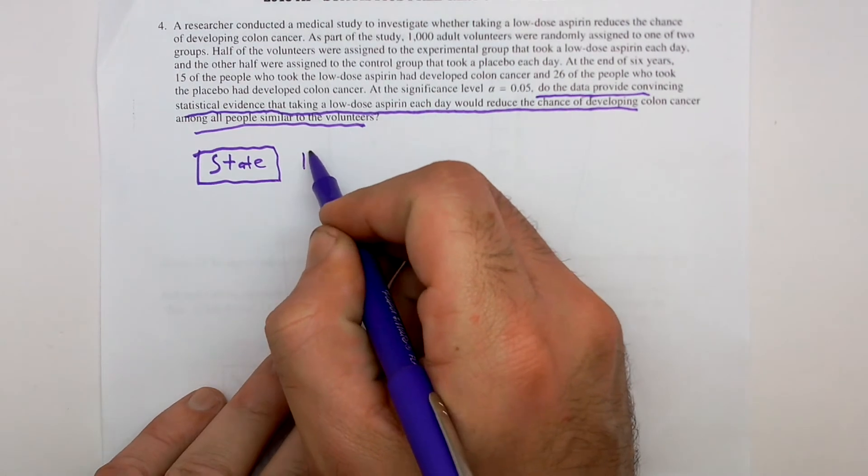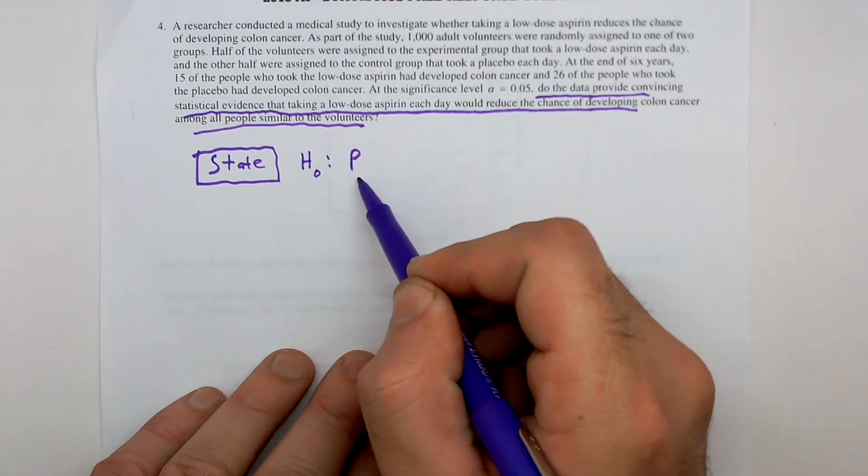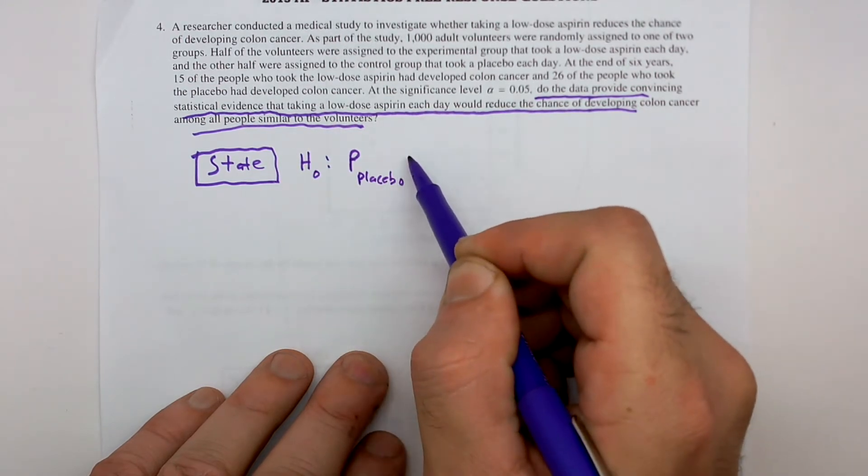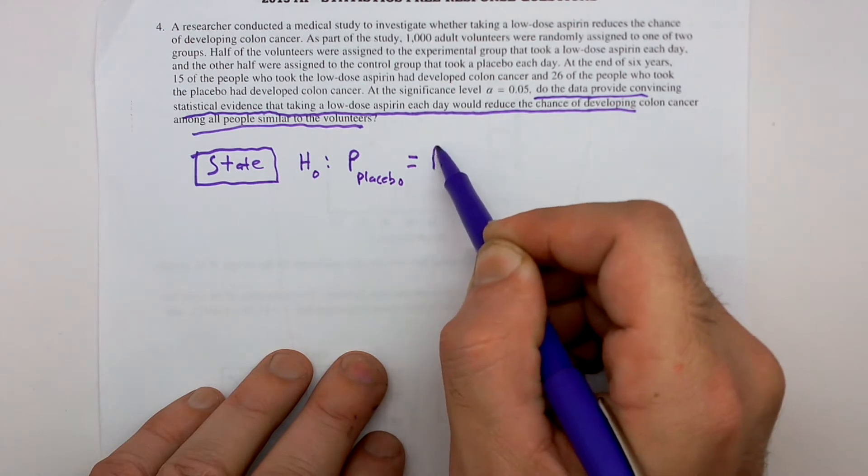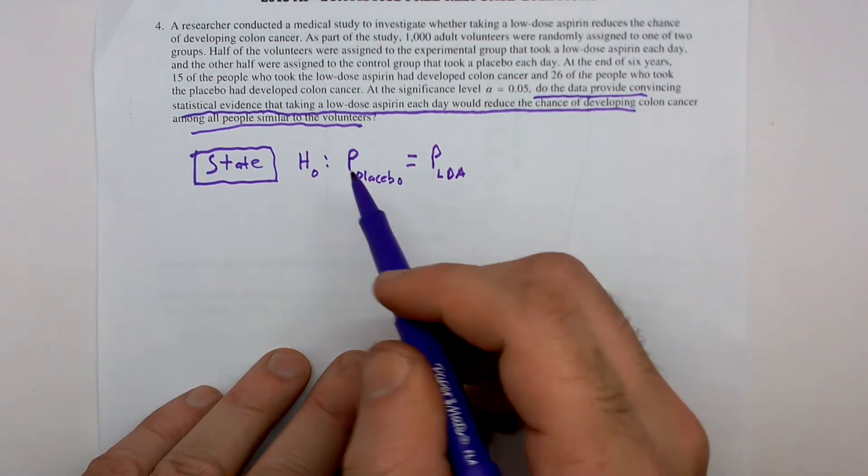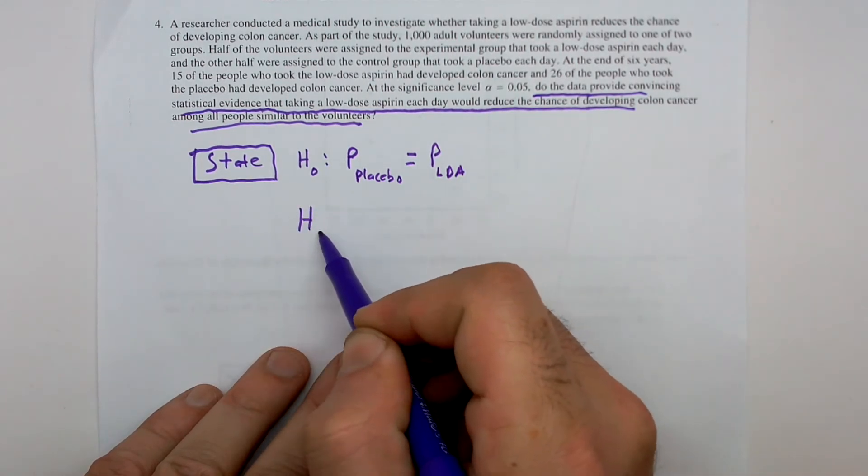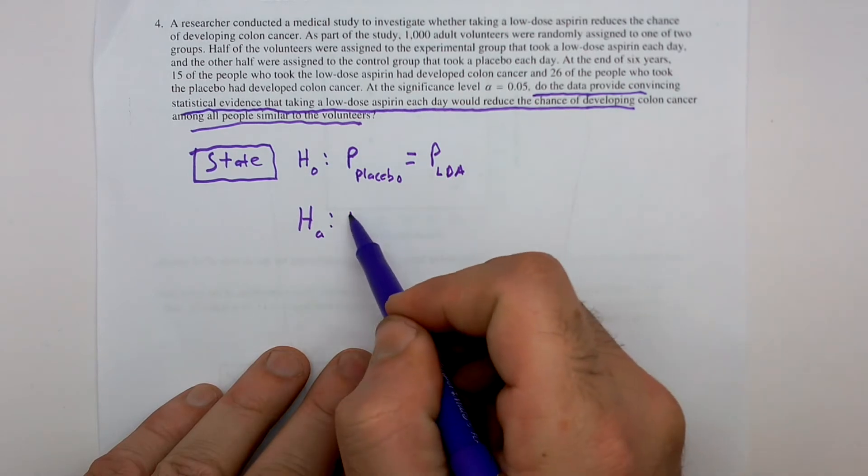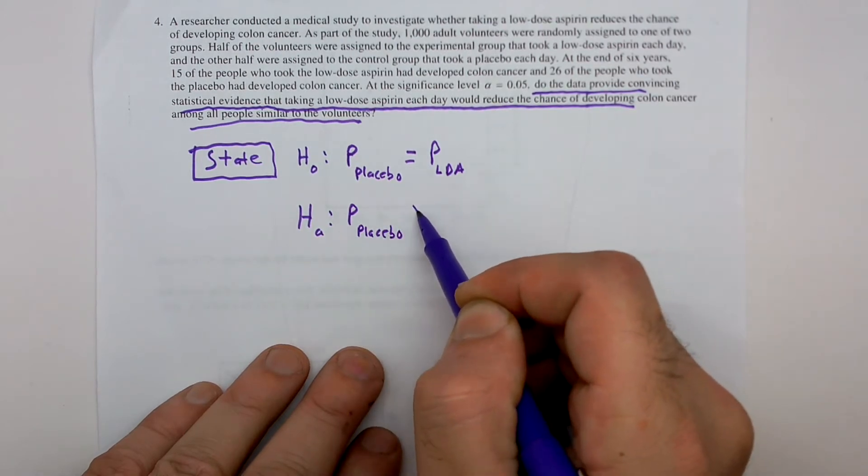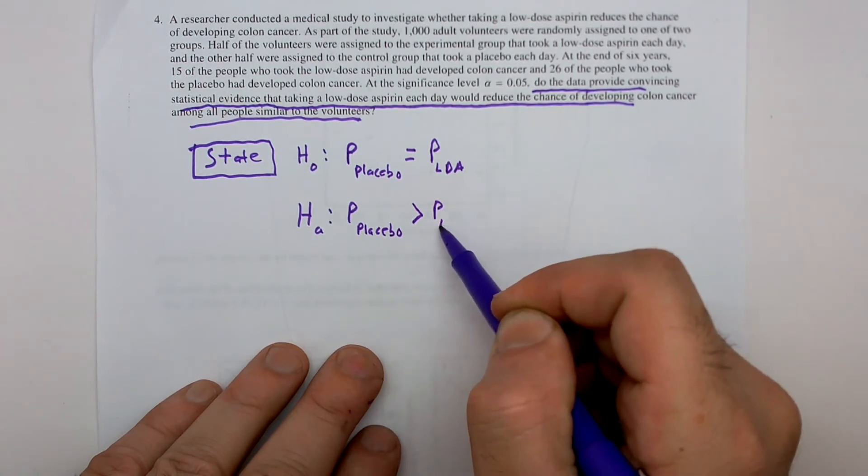All right, so our null hypothesis, our assumption, is that the two proportions are going to be equal. That is, the proportion of people who take a placebo will have the same incidence of cancer as the proportion of people who take low dose of aspirin. And our alternative hypothesis, we're expecting the low dose aspirin to decrease the rate of cancer. So we hope that the proportion of placebo will be greater than the proportion of low dose aspirin.